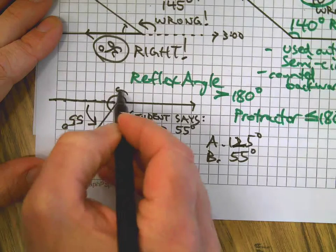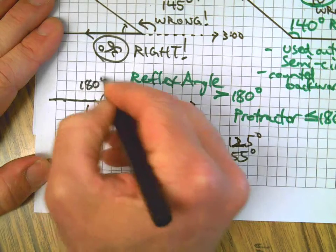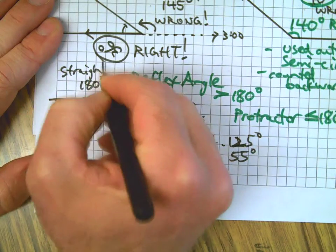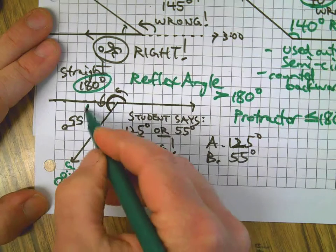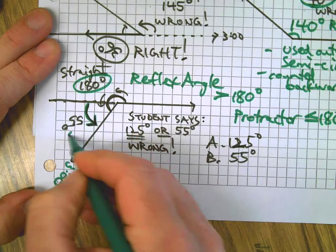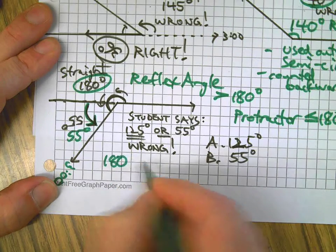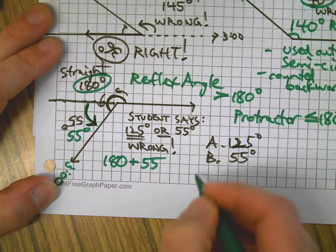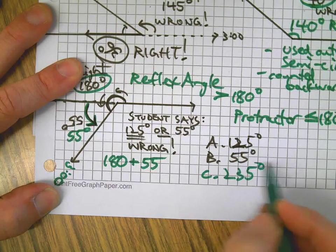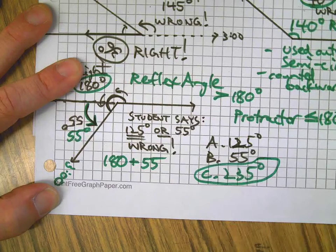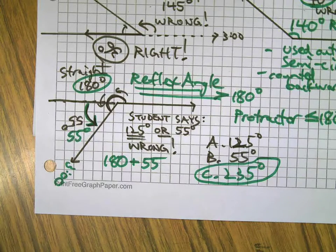Here's the deal: we know a flat line or a straight angle is 180 degrees. And we just found out by making a common mistake that this is 55 degrees. So what do we do? We go 180 plus 55, and hopefully if this was multiple choice, one of your choices would be 235 for that reflex angle. And that's how you could deal with angles that are greater than 180.